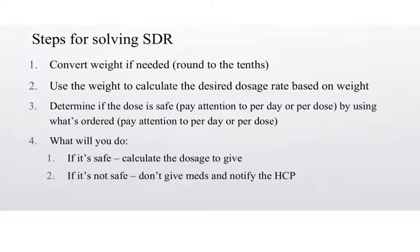These are your steps. First, you're going to need to convert the weight. Sometimes they give it to you in kilograms, but most of the time they don't. If you do have to convert — either pounds to kilograms or pounds and ounces to kilograms — you would need to round to the tenths place. Weight is always to the tenths.